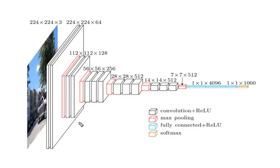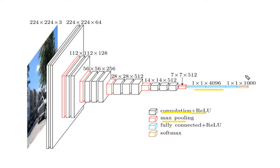We use different types of filters here. The input images are 224×224×3, and as we move further, we have different filters that increase the dimensionality of the output. These filters are called operations. One operation is convolution plus ReLU, another is max pooling. Then we use fully connected plus ReLU, and finally a softmax layer.